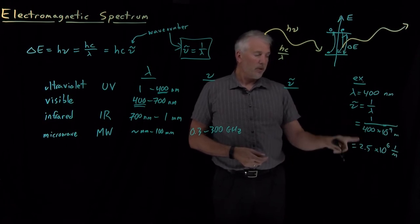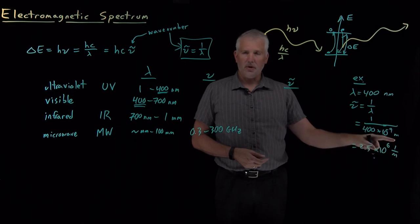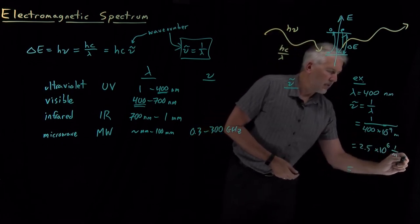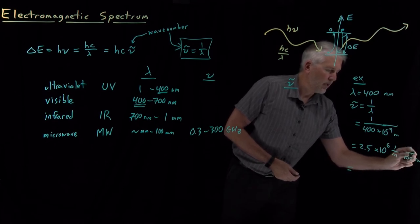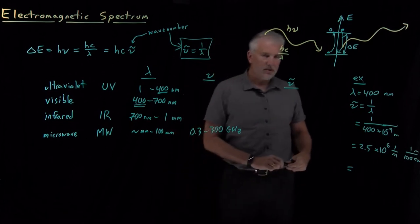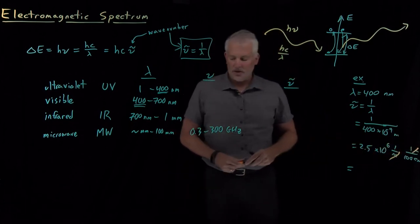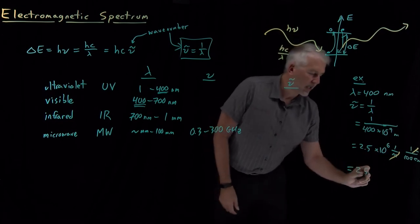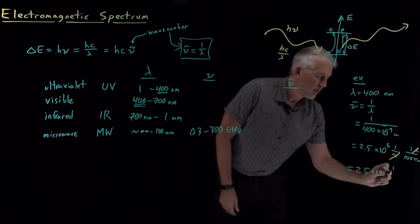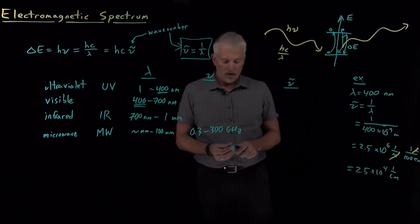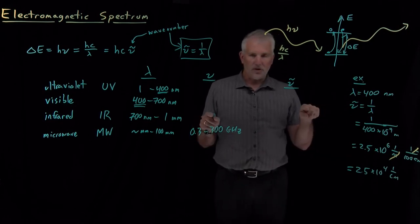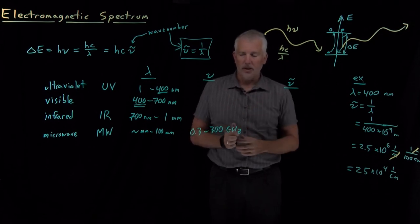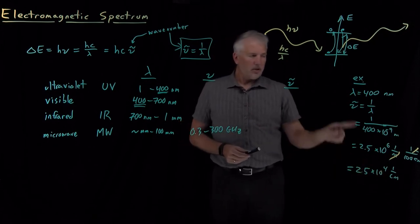We most commonly measure wave number not in units of inverse meters, but in inverse centimeters. Since there are 100 centimeters in one meter, dividing by 100 converts meters to centimeters. So dividing 2.5 times 10⁶ by 100, we get 2.5 times 10⁴ inverse centimeters. Same concept — instead of oscillating two and a half million times in a meter, it oscillates 25,000 times in the length of one centimeter. That's the wave number associated with this wavelength.